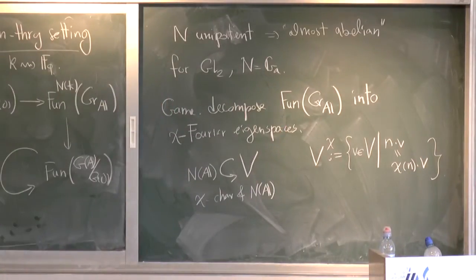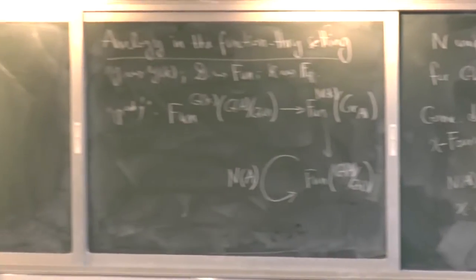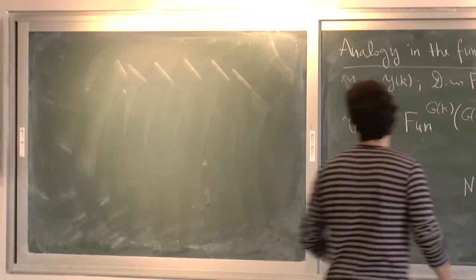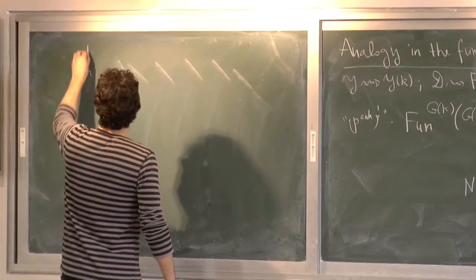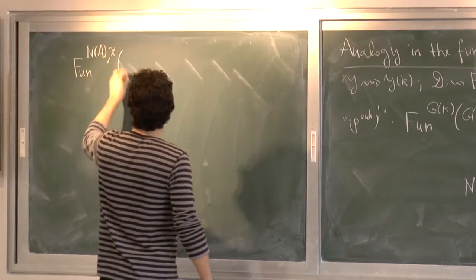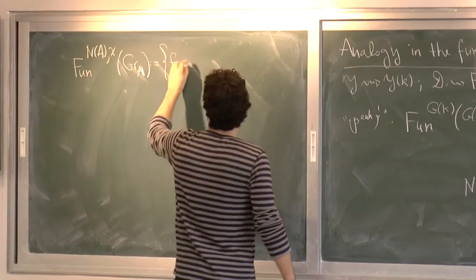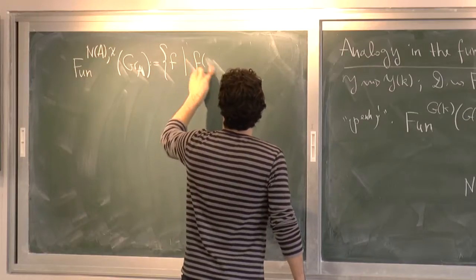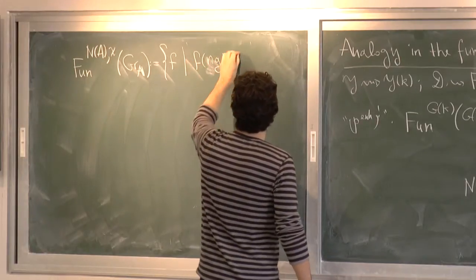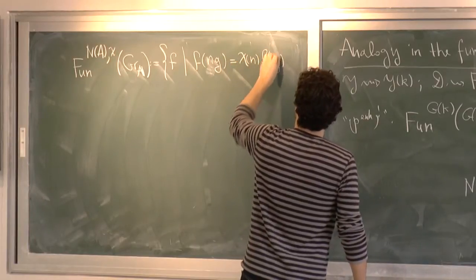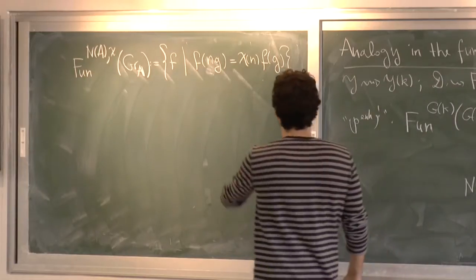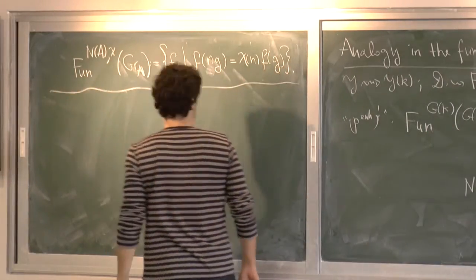So in particular, for our representation, so I apply this to V being our representation, and I use this notation. So functions that are in a way chi invariant, is just by definition, those functions on adelic Grassmannian such that f of NG is equal to chi of N times f of G. I didn't do anything. I just rewrote the definition in my case.